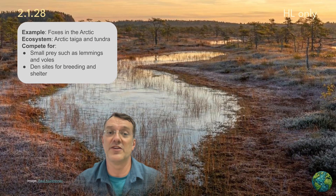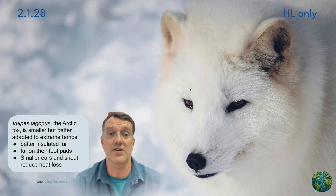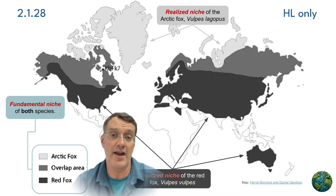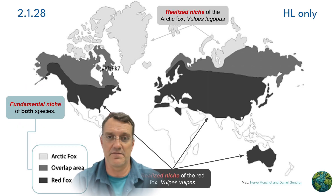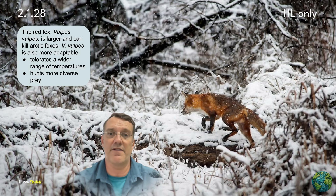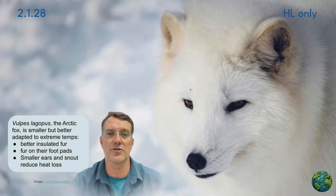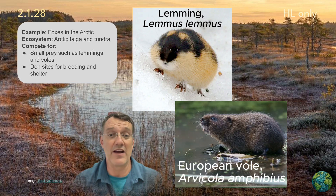In the Arctic, we see a similar pattern with foxes. The red fox, Vulpes vulpes, and the Arctic fox, Vulpes lagopus, could theoretically inhabit the entire Arctic region — that's their fundamental niche. But in reality, they divide the territory. The bigger red fox dominates the more productive southern regions, while the Arctic foxes are pushed into the harsher northern areas. Their realized niches are determined by competition for prey like lemmings and voles, and they also compete for den sites for breeding purposes.